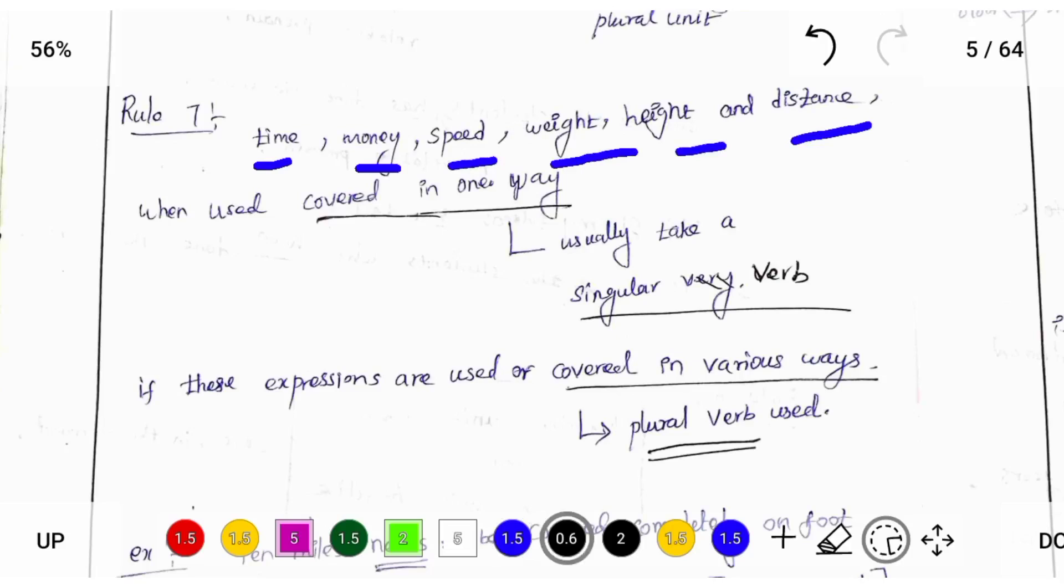These all are parameters. When we covered in one way, we should use singular verb. Otherwise, we should use plural verb. If we cover these parameters in different ways, we should use plural verb.